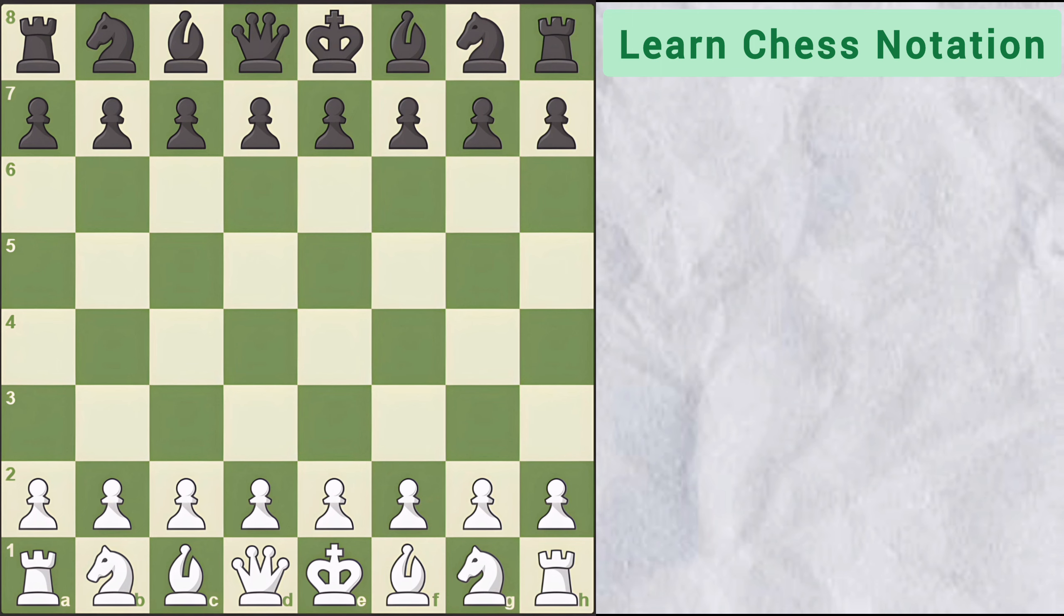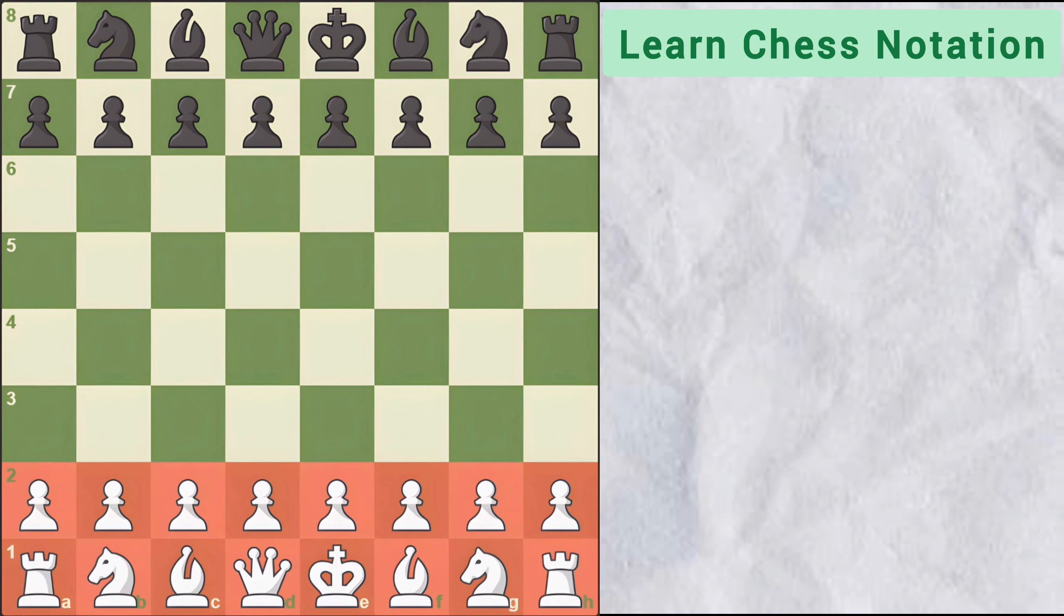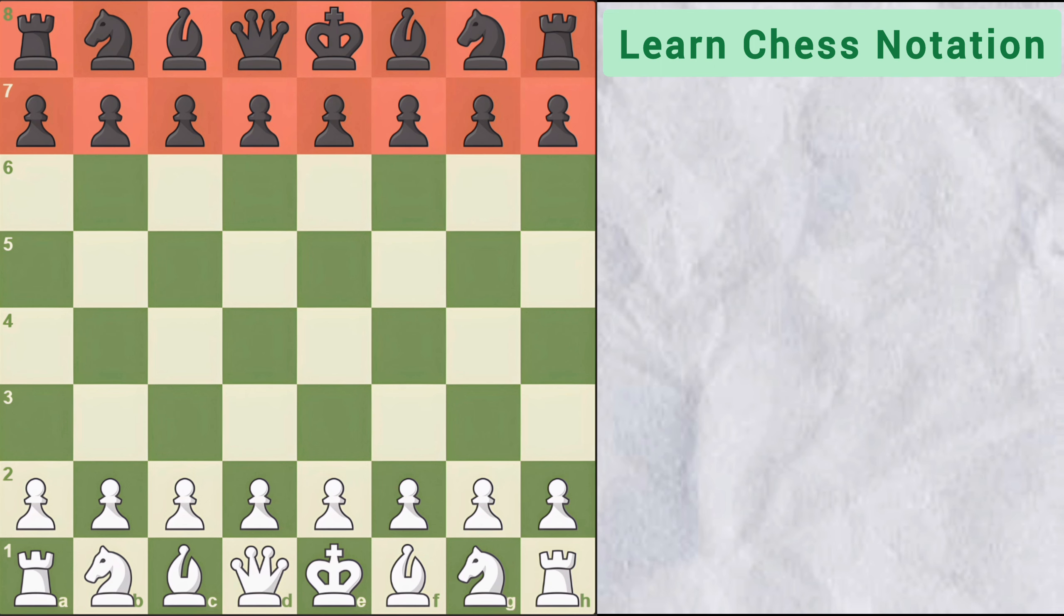So at the start of the game, white pieces are arranged on the rank 1 and 2 and black pieces are placed on the rank 7 and 8.